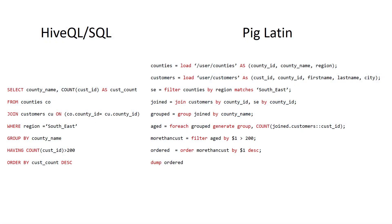Here we have a side-by-side comparison of HiveQL SQL with Pig Latin. HiveQL SQL is a declarative language where you say what you want without having to say how to do it, whereas Pig Latin is a procedural language where you have to specify the exact steps to get the results.